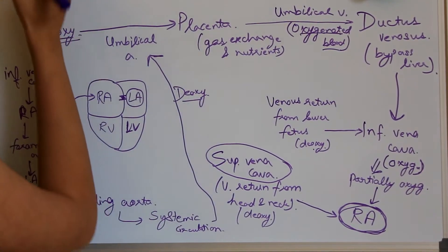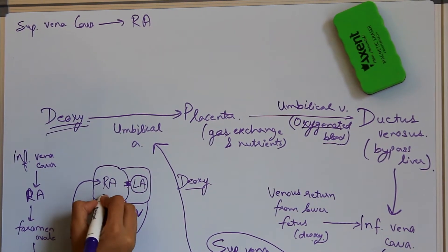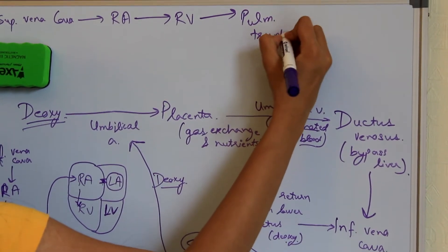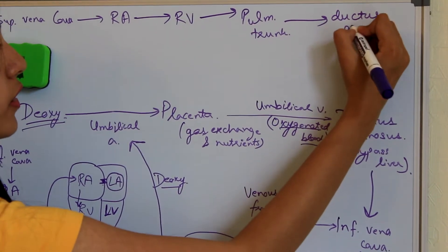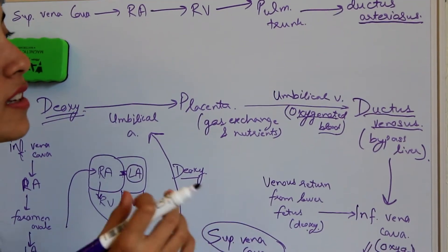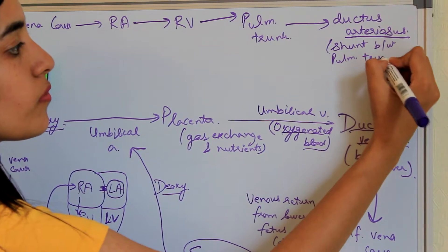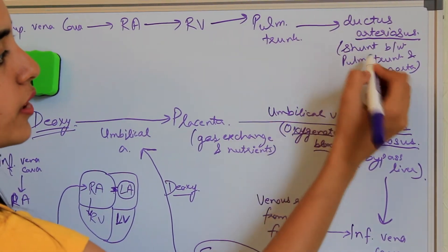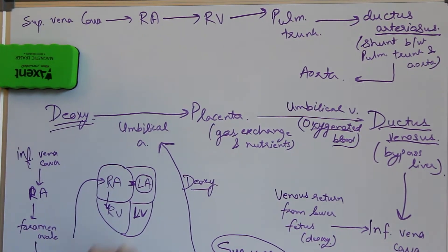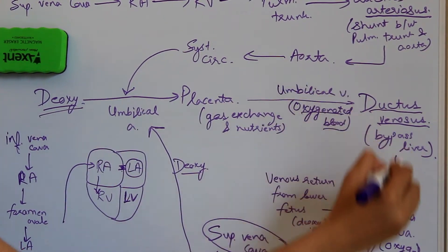Now, discussing the superior vena cava: the blood from the superior vena cava goes to the right atrium but does not go to the foramen ovale. It goes to the right ventricle, then to the pulmonary trunk, and after that to the ductus arteriosus. Please note the difference — ductus venosus is the structure that bypasses the liver, whereas ductus arteriosus is the shunt between the pulmonary trunk and the aorta. After the ductus arteriosus, it goes to the aorta, then to systemic circulation, then to the umbilical arteries, and the whole process continues.